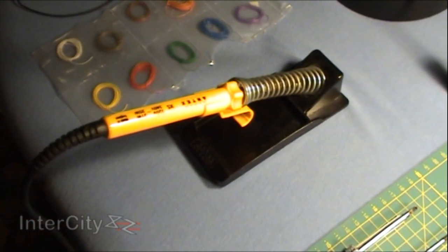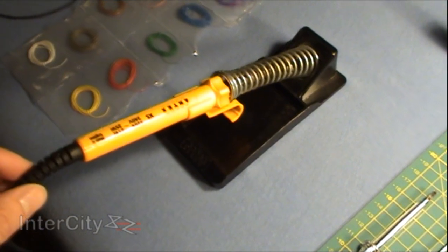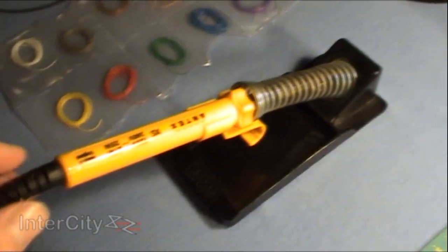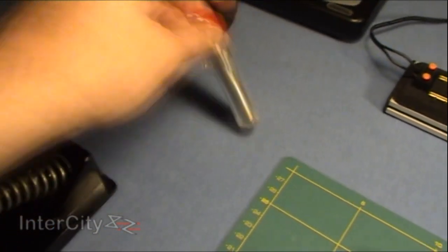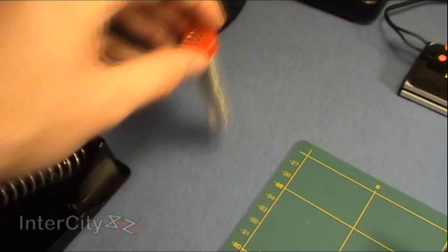Panning round, we come to the soldering iron. It is essential that you have one of these. It's going to make fitting a DCC chip to a non-DCC ready locomotive very hard if you haven't got one. And just there we've got the solder, all coiled up inside. We'll be using that later.